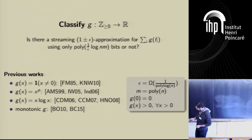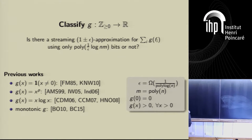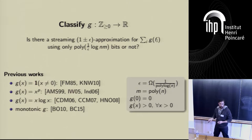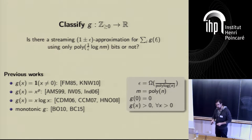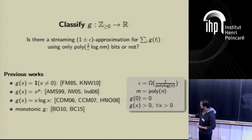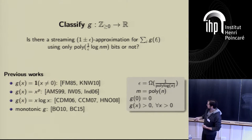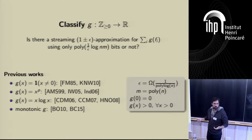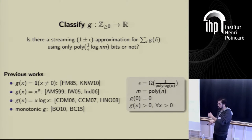The motivation is a striking dichotomy in the frequency moments, the LP norms. If I choose g(x) = x^p, I'm looking for the p-th moment of the vector. For p less than or equal to 2, this can be done in log n bits. For p strictly greater than 2, it requires polynomial space. So the question is: what's special about p ≤ 2 versus p > 2? If I'm given another function, how can I know when I can approximate this sum in small space or not?